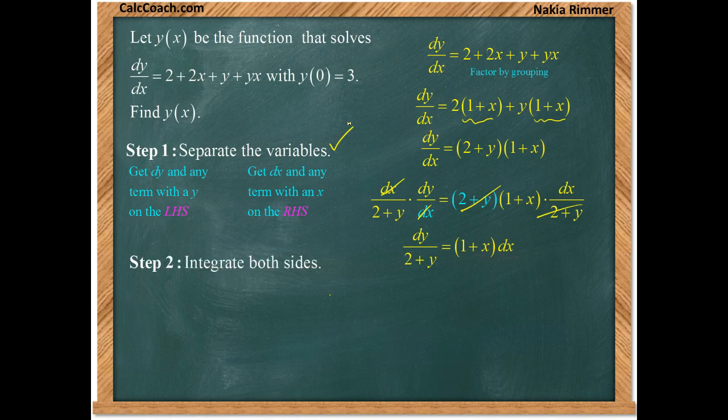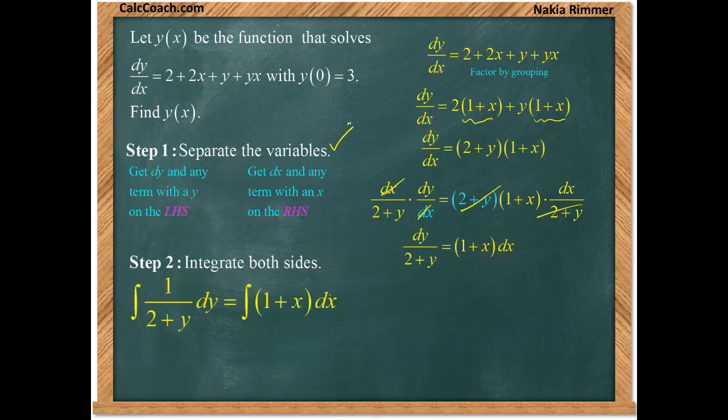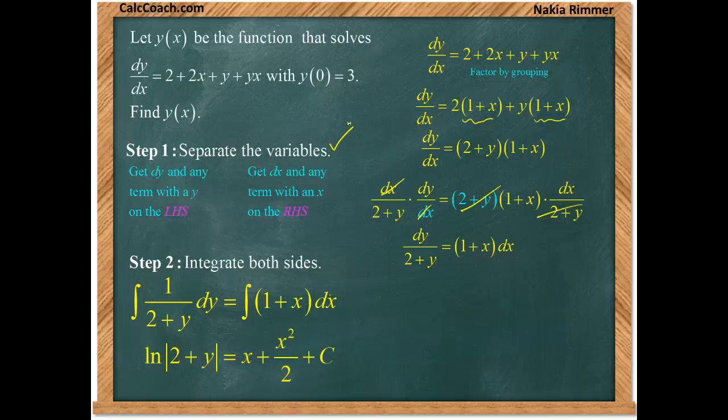Step two, we need to integrate both sides. The left will be a natural log, and the right will just be a polynomial integration. So we have ln(2 + y) = x + x²/2 + C.